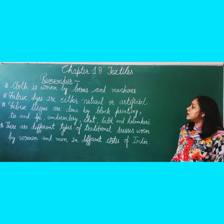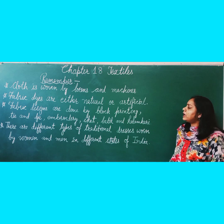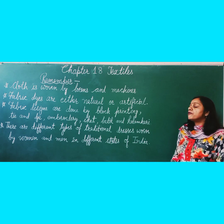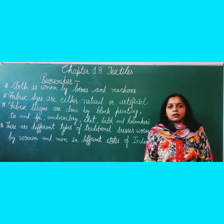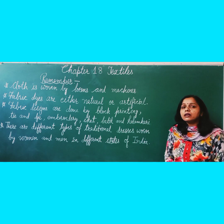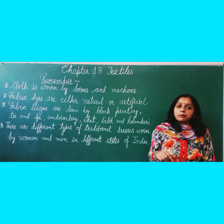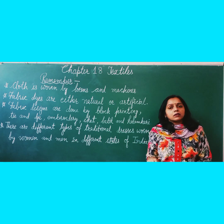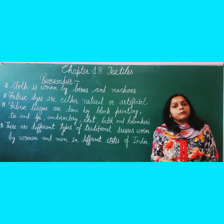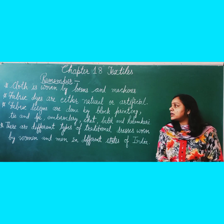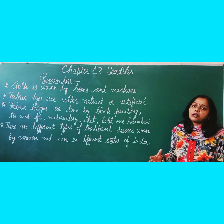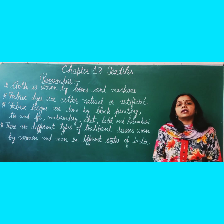Fabric designs are done by block printing, tie and dye, embroidery, ikat, batik, and kalamkari. There are several methods to make designs on fabric. In block printing, wooden blocks with designs are dipped in color and printed on the fabric. In tie and dye, the fabric is tied with thread and dipped in color. Embroidery, batik, and kalamkari are also popular methods.